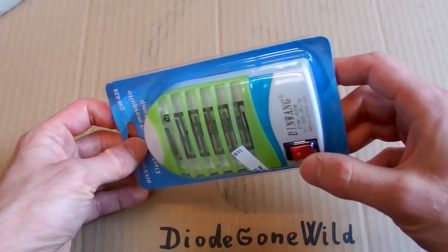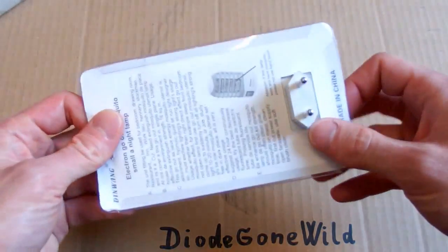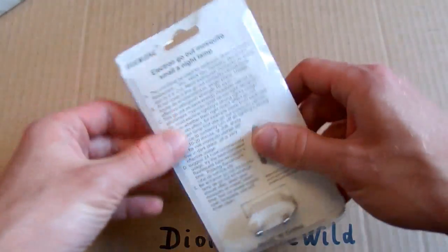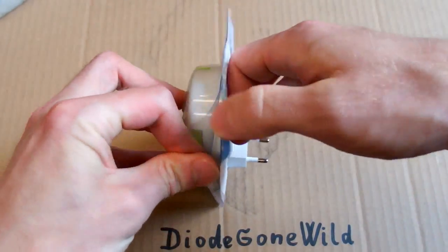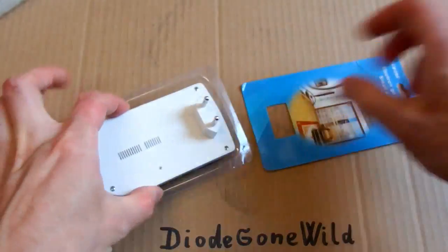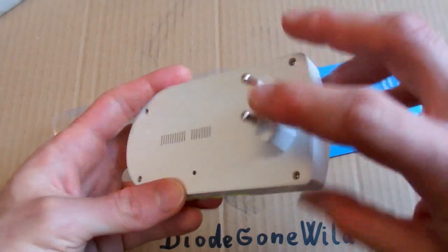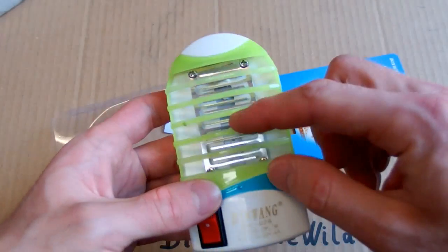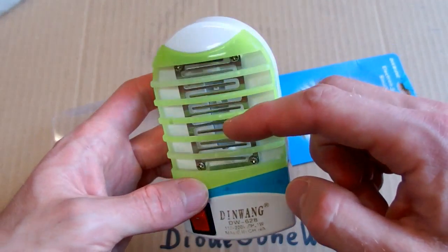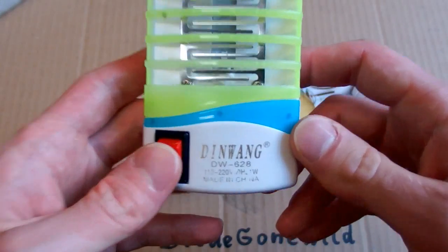It has a nice package, a switch, a European plug, so it looks okay. Let's open it up. A plug. There's the grid and some LEDs. Nice switch.